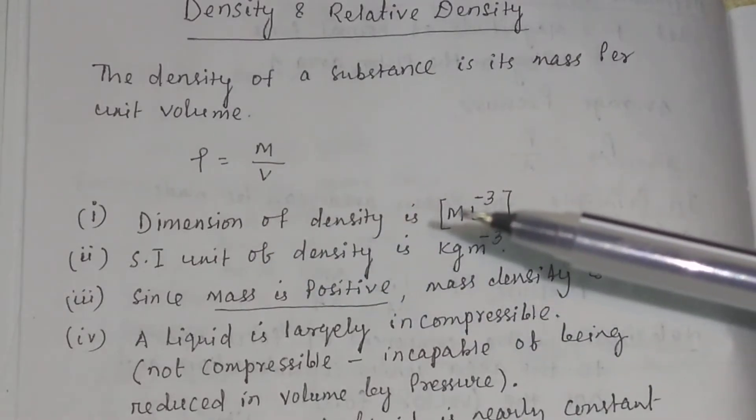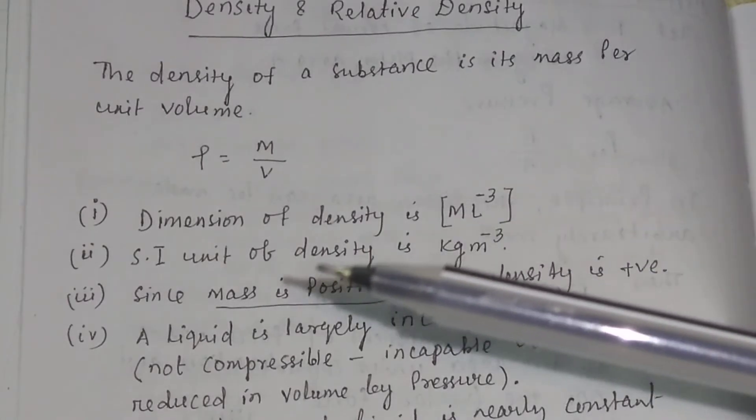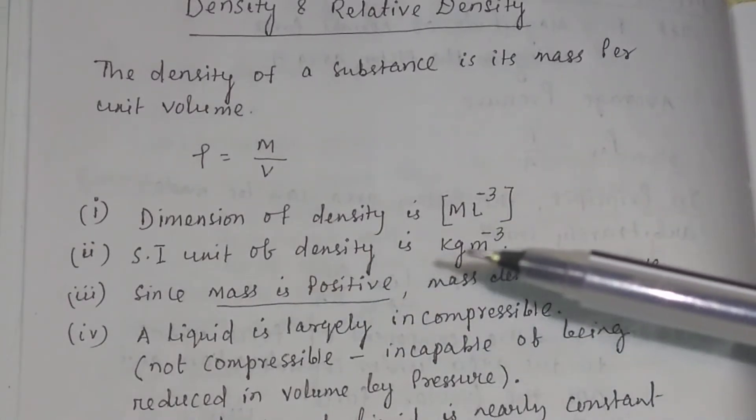Dimension of density is m to the power 1, L to the power minus 3. The SI unit of density is kg per meter cube.